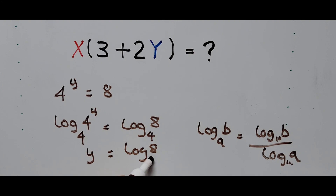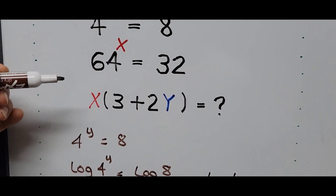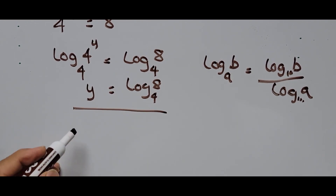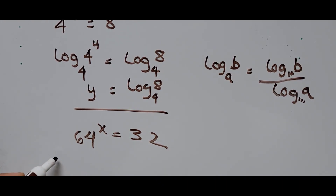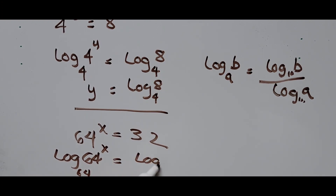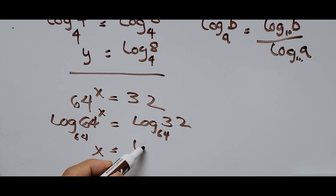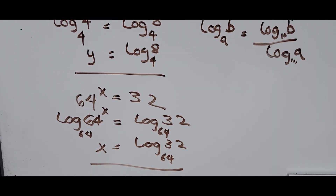So y equals logarithm of 8 to the base 4. Next we focus on the second exponential equation: 64 raised to x equals 32. Using common logarithm the same way — log base 64 of 64 raised to x equals log base 64 of 32 — the base cancels and we get x equals logarithm of 32 to the base 64. We have now found the values of y and x using logarithm.